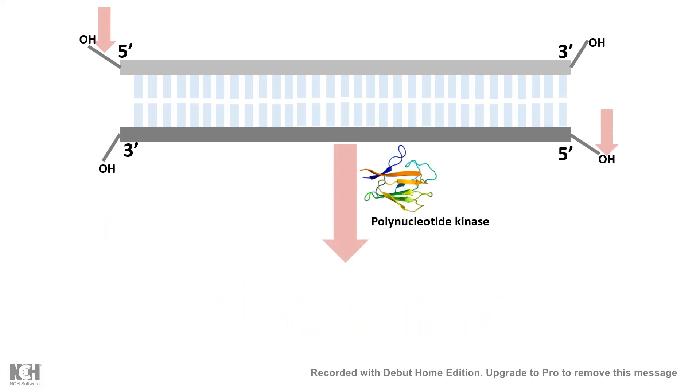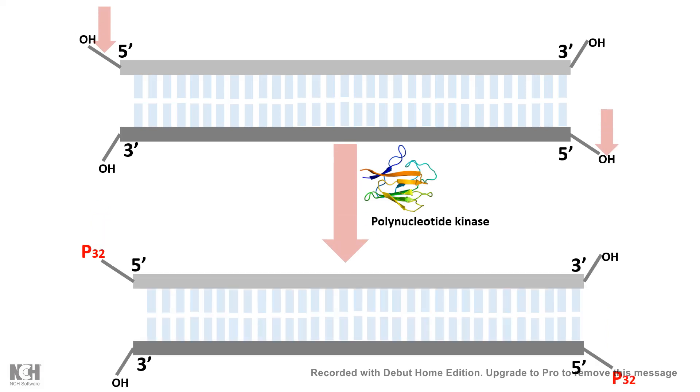Polynucleotide kinase would add phosphate group. Now, in the solution, while using polynucleotide kinase, we can give P32 labeled phosphate groups. As a result, the end of these DNA fragments would be labeled by radioactive phosphorous.